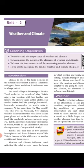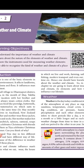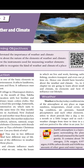Climate is one of the basic elements in the natural environment. It affects landforms, soil types, fauna and flora — that is, plants and animals — and also influences man to a large extent. According to the place, the climate and weather will change.